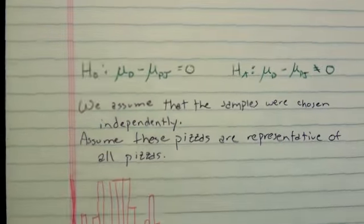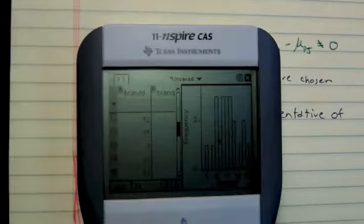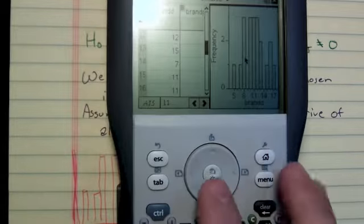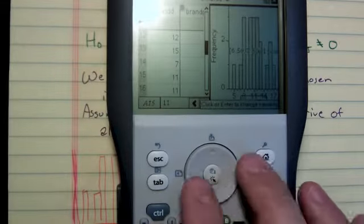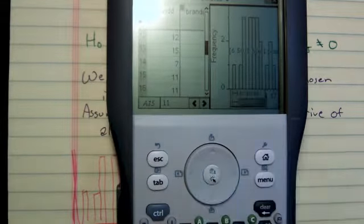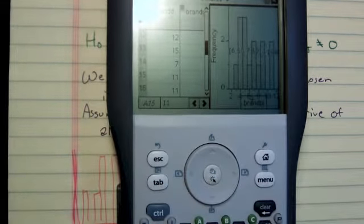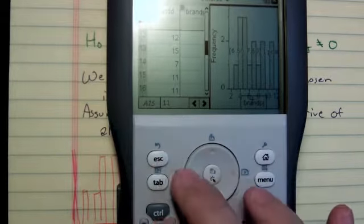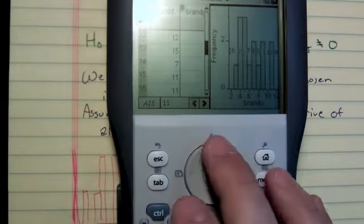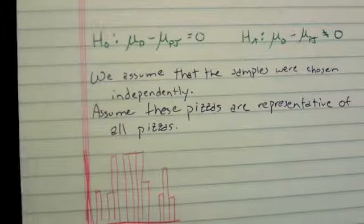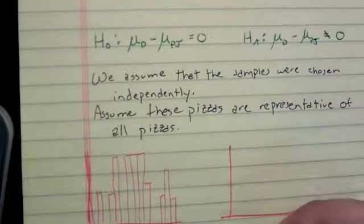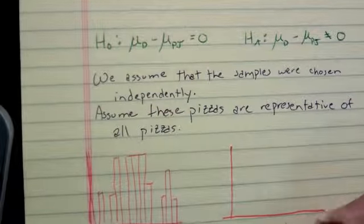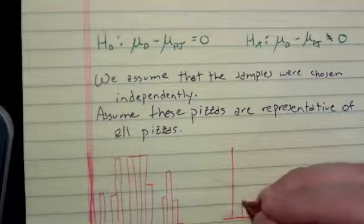And then I need to do the exact same thing with brand PJ. Now, on the inspires, this is really easy. You can just come down here and highlight brand D and change it to brand PJ, and it will adjust it. Now, this looks a little less normal than the previous one, but I'd say it looks normal enough. This is brand PJ. Normal enough.